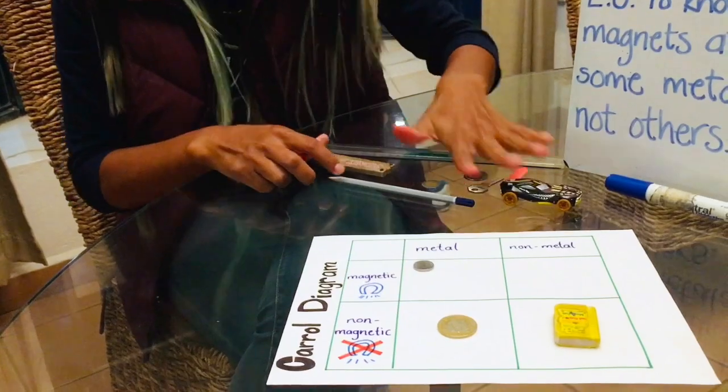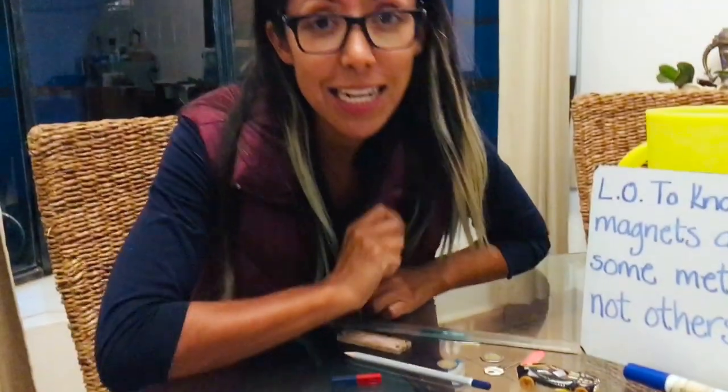Once you sort out your at least 10 items, I want you to take a picture of your Carroll diagram and show me which items were non-magnetic, which ones were magnetic, and which ones were metal and non-metals. Have a beautiful day and see you later! Bye!